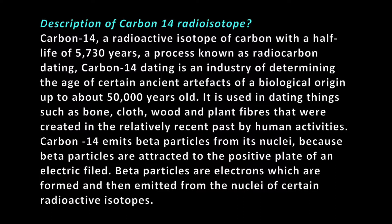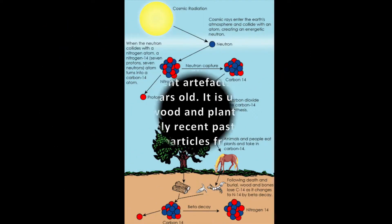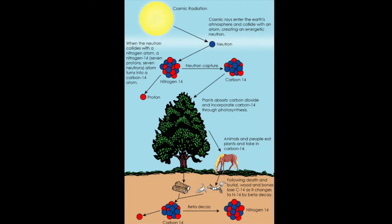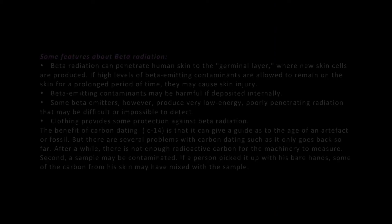Carbon-14 emits beta particles from its nuclei. Beta particles are electrons which are formed and then emitted from the nuclei of certain radioactive isotopes.